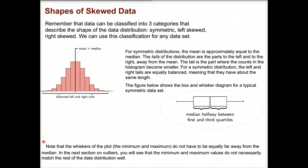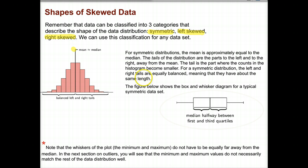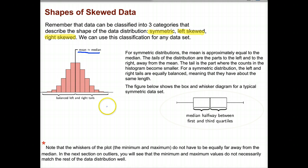Now let's look at the shapes of skewed distributions. If you recall from an earlier lesson, there are three categories that describe the shape of data: symmetric, which is your normal bell curve; left skewed; and right skewed. We can use that classification for any set of data. On the symmetric distribution, the mean is equal to the median, as well as the mode. The tails on the left and right are very symmetric. You can think of this almost as a grading scale — very few people get Fs, more people get Cs and Bs, and very few get As. That is your symmetric distribution.